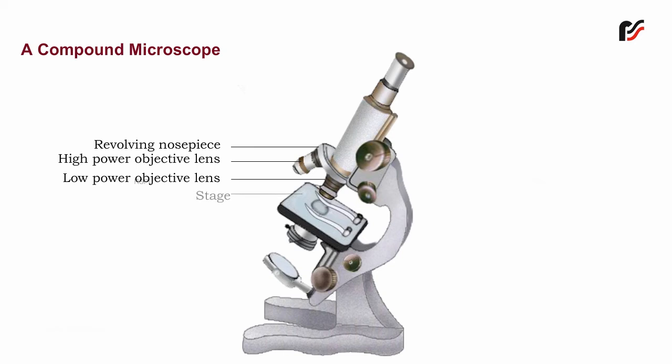Stage: The stage is a rectangular flat metallic plate fixed to the lower end of the arm. It has a hole in the center for light to reach the object, and it is used for keeping the object to be observed.